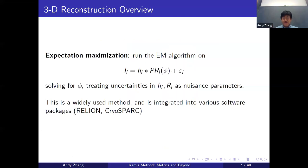The second widely-used method for 3D reconstruction, incorporated into various software packages, is the expectation maximization algorithm. We run EM on the image formation model. There are many parameters involved, but the only one we actually care about is the electrostatic potential — we treat everything else as nuisance parameters, including the point spread function and the relative rotations. Multiple software packages that people use in the lab have this method incorporated.